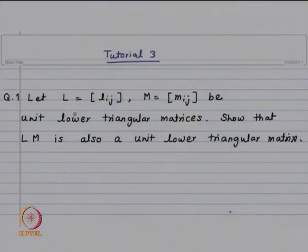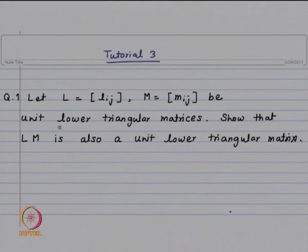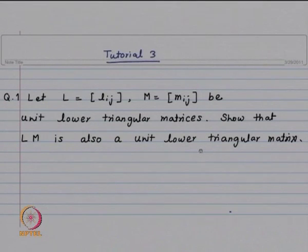Here is the first tutorial problem: you have got two matrices L and M of size n by n, and they are unit lower triangular. That means the diagonal entries are equal to 1. We want to show that L into M is also a unit lower triangular matrix. The proof is going to be straightforward — we will just look at the multiplication of these two matrices.